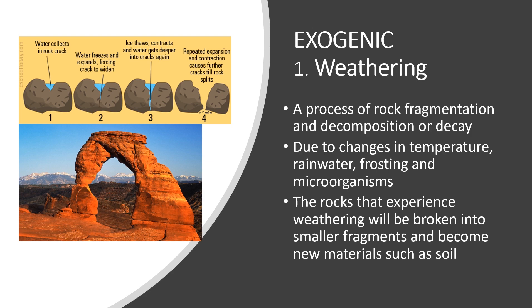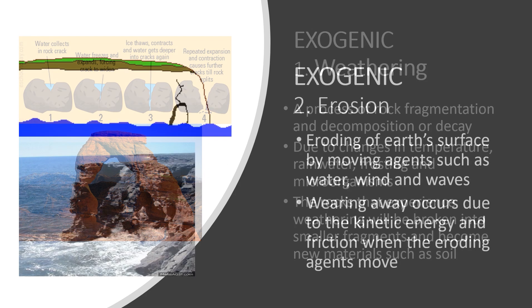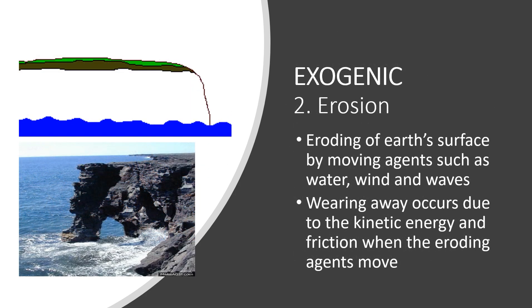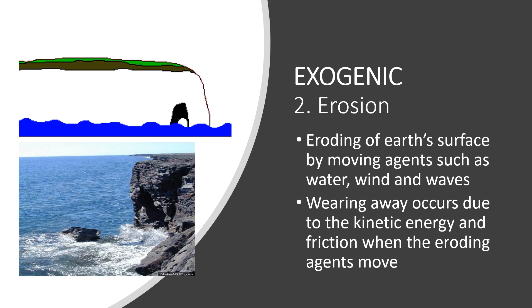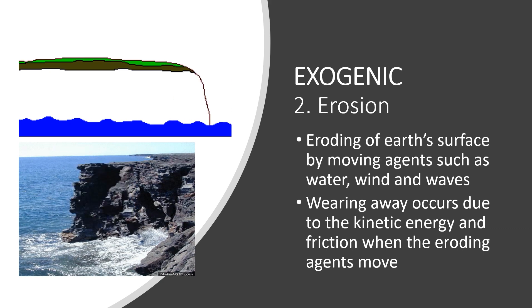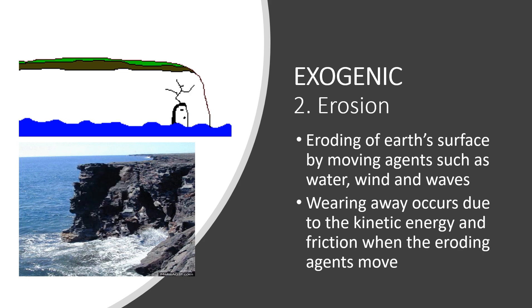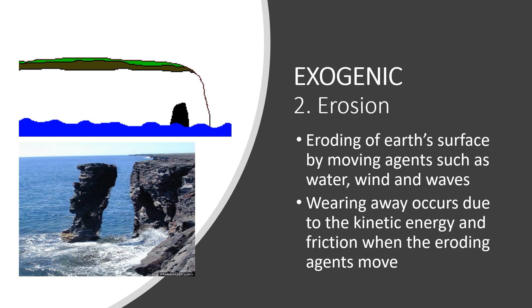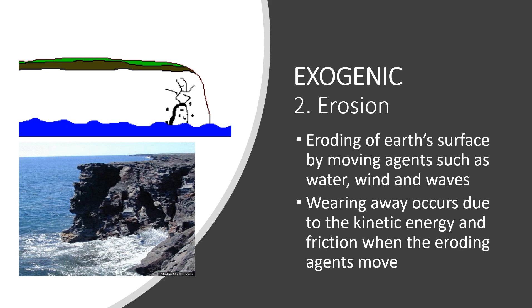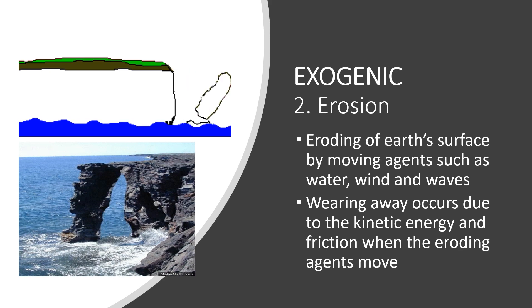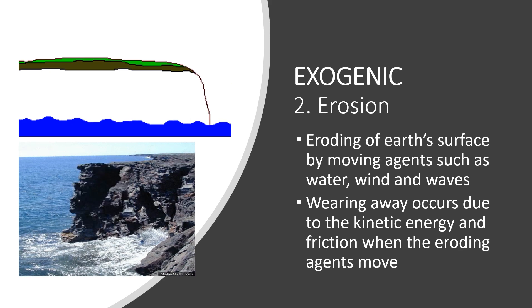The second example of exogenic process is erosion. It is a process of eroding of Earth's surface by moving agents such as water, wind, and waves. Wearing away occurs due to the kinetic energy and friction when the eroding agents move.